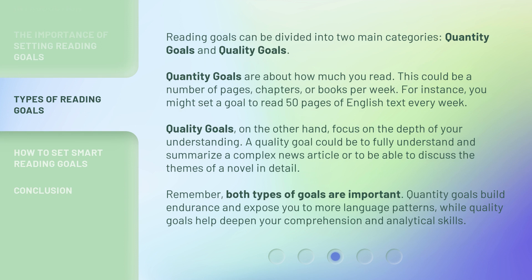Reading goals can be divided into two main categories: quantity goals and quality goals. Quantity goals are about how much you read — this could be a number of pages, chapters, or books per week. For instance, you might set a goal to read 50 pages of English text every week. Quality goals, on the other hand, focus on the depth of your understanding. A quality goal could be to fully understand and summarize a complex news article, or to be able to discuss the themes of a novel in detail.